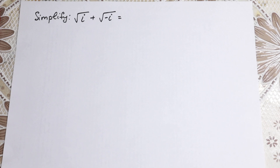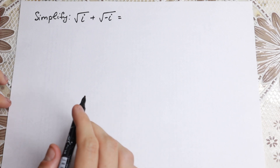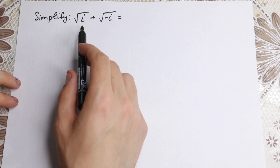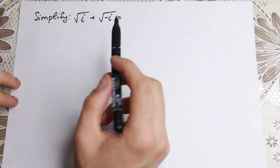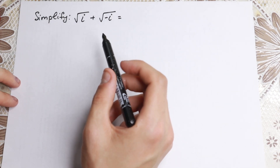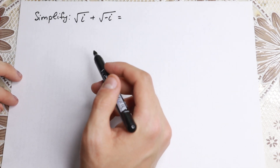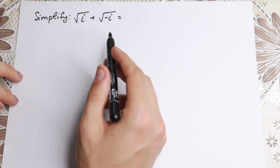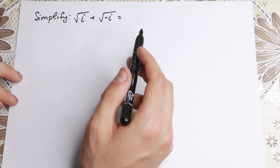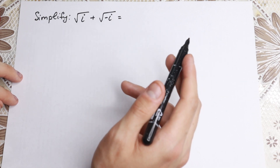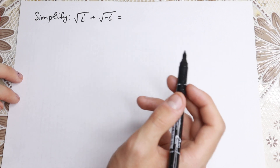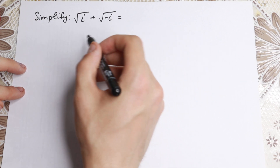Hello everyone! Welcome back to higher mathematics. Happy to see you here. We have a really interesting problem today. We need to simplify the square root of i plus the square root of minus i. There are a lot of methods to do this, but I want to show you the first method — the one I like best.